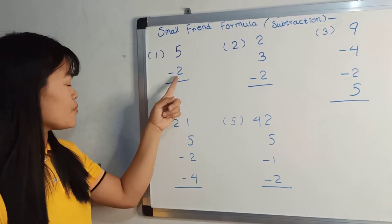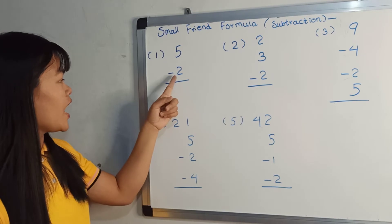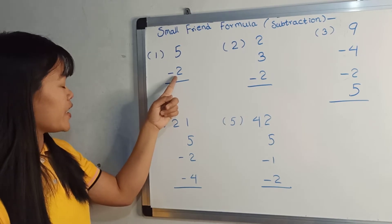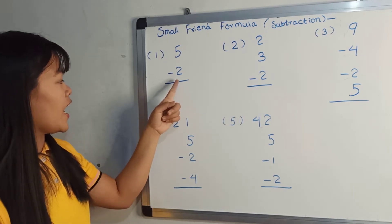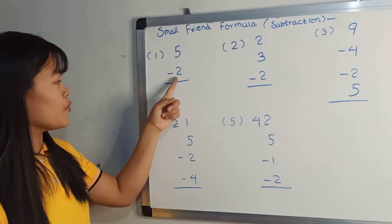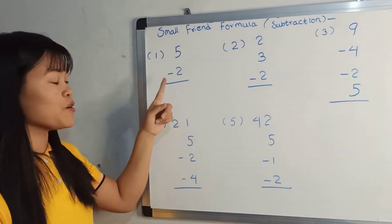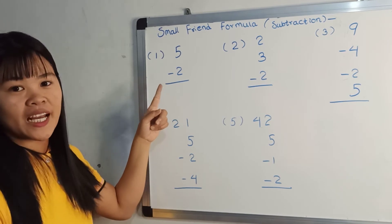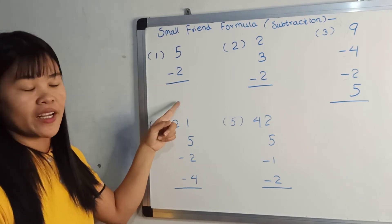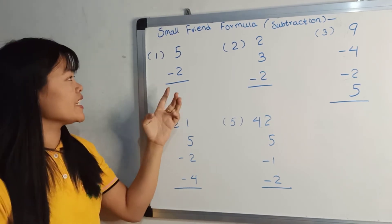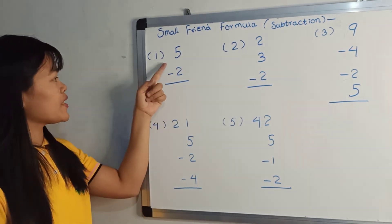So if you have 2, we have 3 times each time, and we will have 3 times each time. If you have 3 times each time, you will have 3 times each time.